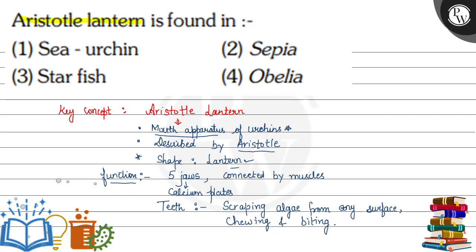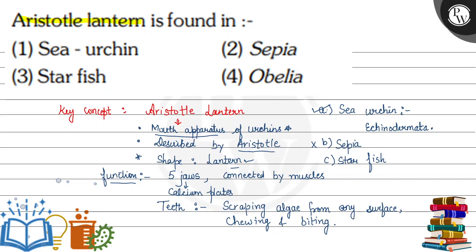From the given options, Aristotle's lantern is present in sea urchin — that is the first option and the right answer. Sea urchin is a marine animal belonging to the phylum Echinodermata. The other options are discarded: sepia is a cuttlefish belonging to Mollusca, starfish belongs to Echinodermata but does not possess this structure, and obelia belongs to phylum Coelenterata and also does not have it. So the correct answer is option one — sea urchin. I hope you understood it well. Best of luck, thank you.